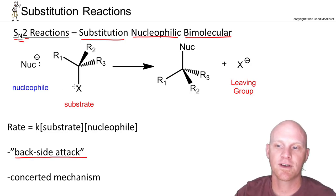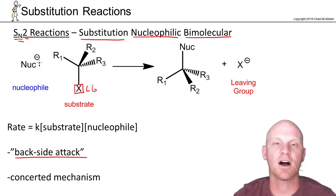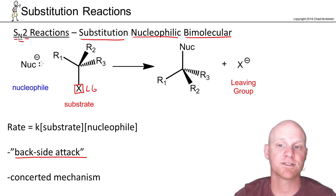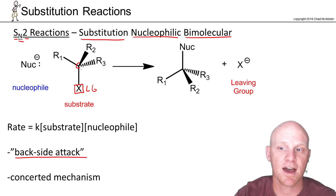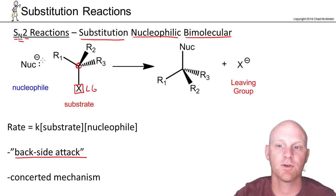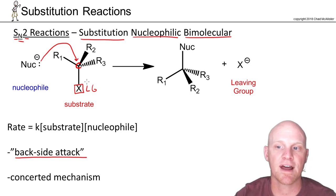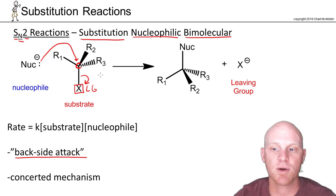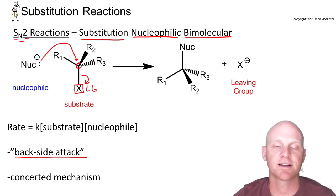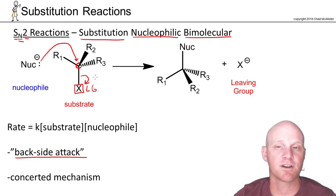X, the leaving group, is typically a halogen. The nucleophile comes in 180 degrees away from the leaving group, attacking the carbon attached to it. That bond then breaks as the nucleophile attaches — that's backside attack, and it explains most of the reactivity trends we see in SN2 reactions.